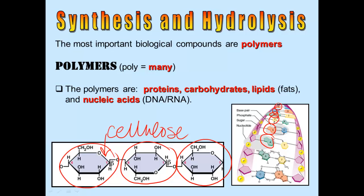So there are four types of polymers that we're going to talk about this year: proteins, carbohydrates, lipids, which we already know are fats, and nucleic acids. Nucleic acids are DNA and RNA.